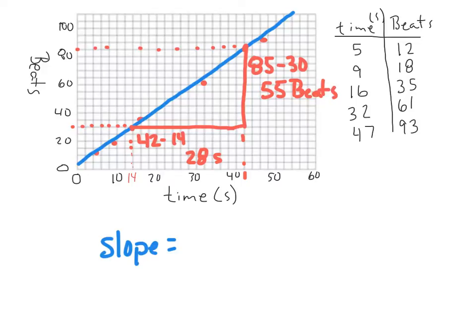And the slope is figured out by the rise, the amount we went up. That's 55 beats. So I have 55 beats over how far we went over, which is 28 seconds.